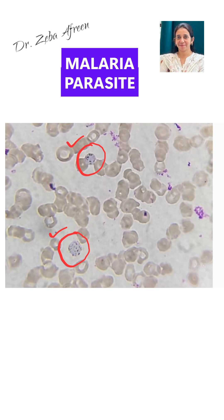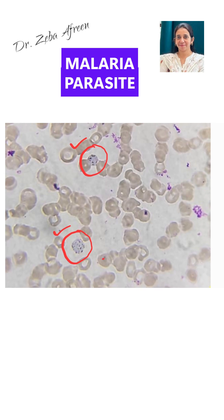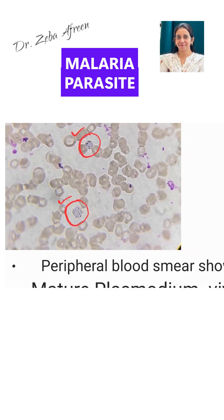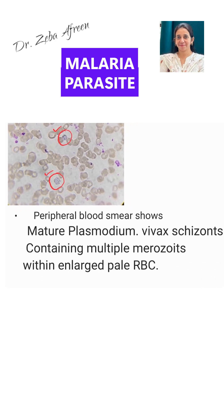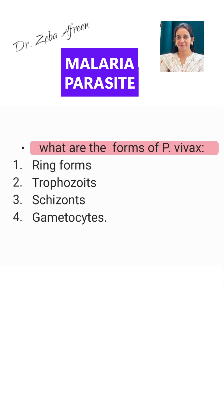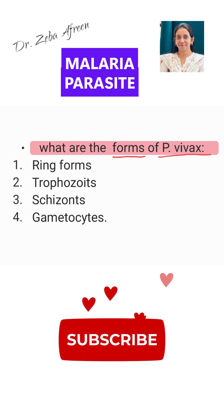The RBCs appear enlarged and have pale cytoplasm. The reason the RBCs are enlarged is because the malaria parasite attacks only the immature RBCs, and immature RBCs are larger than normal mature RBCs. Now, what are the different forms of Plasmodium vivax that we can see on a peripheral blood smear?